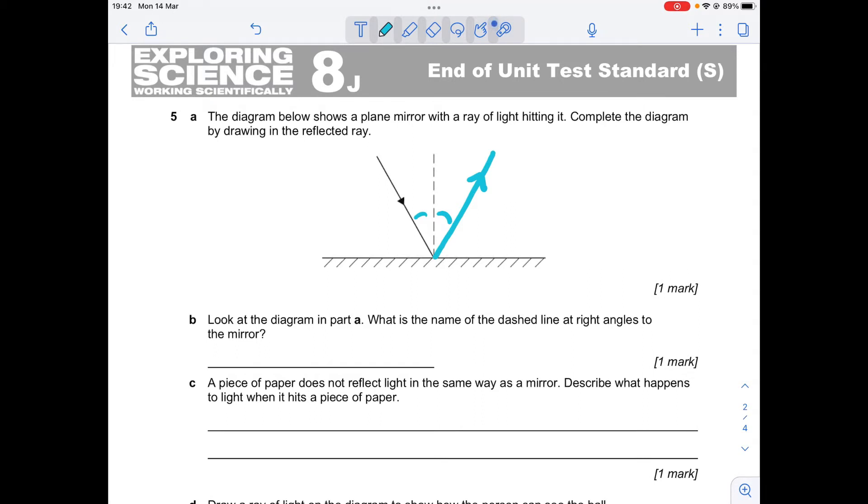Look at the diagram in part A. What is the name of the dashed line at right angles? This dashed line here. Oh yes, that makes more sense. What's the name of that? So do you remember something that was perpendicular to the surface you were reflecting from was called a normal.